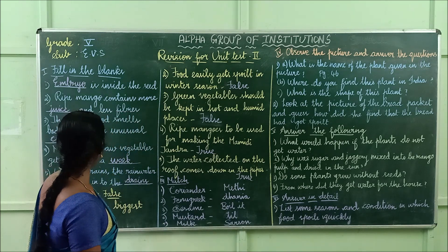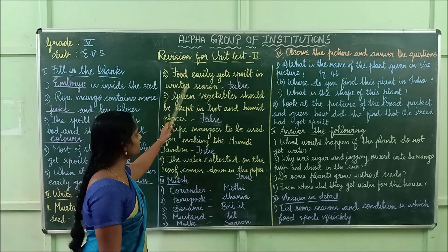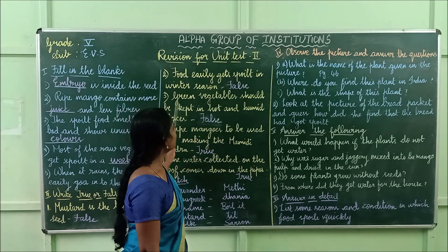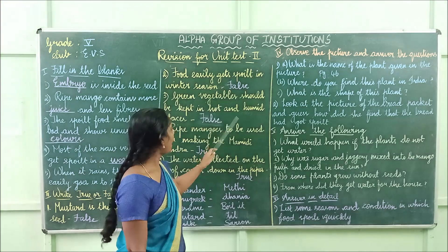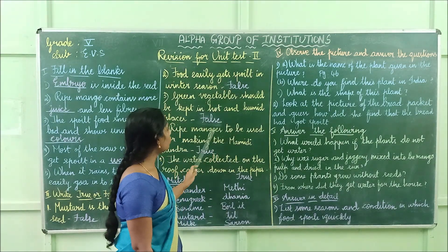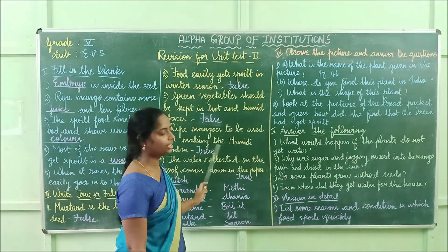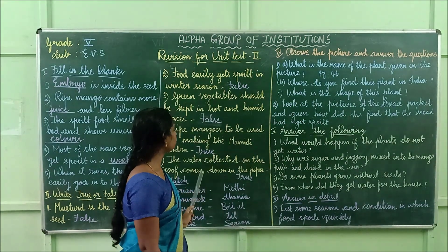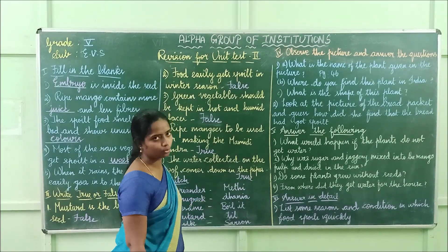Let me repeat the true/false answers. Mustard is the biggest seed — false. Food easily gets spoiled in winter season — false. Green vegetables should be kept in hot and humid places — false. Ripe mangoes to be used for making mamadi tundra — true. The water collected on the roof comes down in this pipe — true.